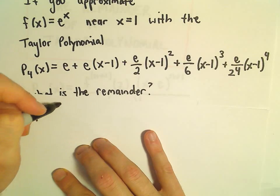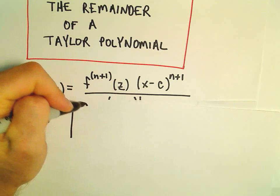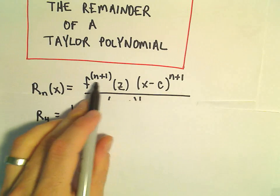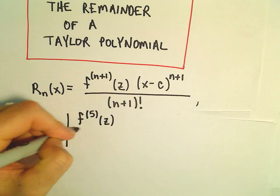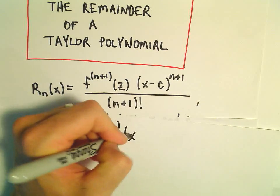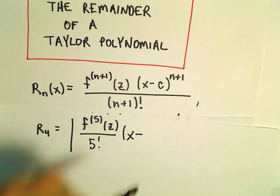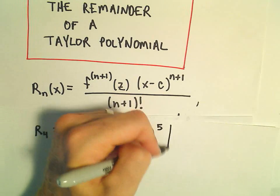So it says the remainder, and we need to put this in absolute value here. It'll be the n plus 1, so the 5th derivative evaluated at z over 5 factorial. And then we'll take x minus where we're centering it, which for us is at positive 1, and then all of that will be raised to the 5th power.